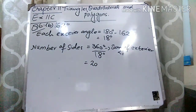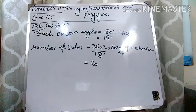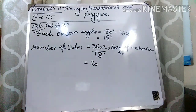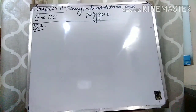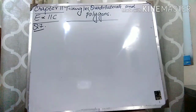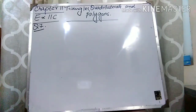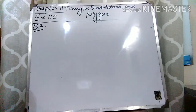Parts C and D are just like Part B — I hope you'll be able to do them yourself. Now let's come to question number 7. The question is: if the sizes of the interior angles of a pentagon are 2x, 3x, 4x, 5x and 6x, find the largest interior angle of the pentagon.